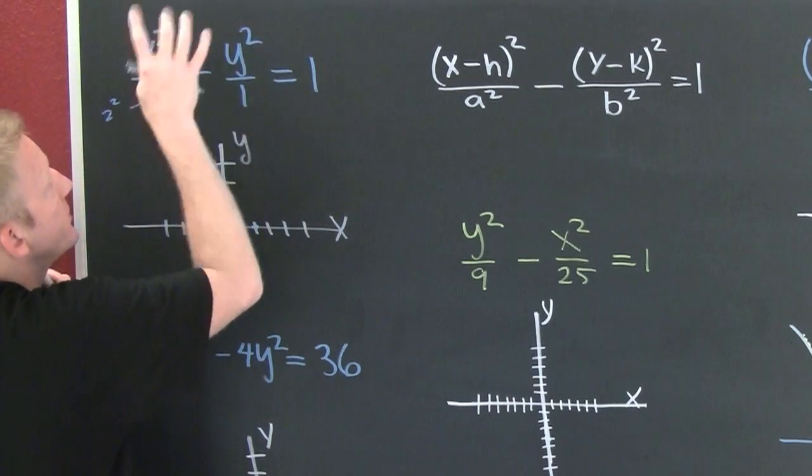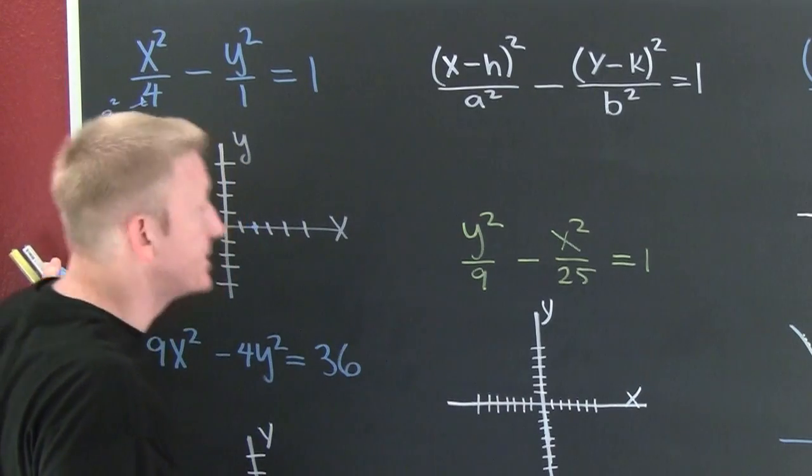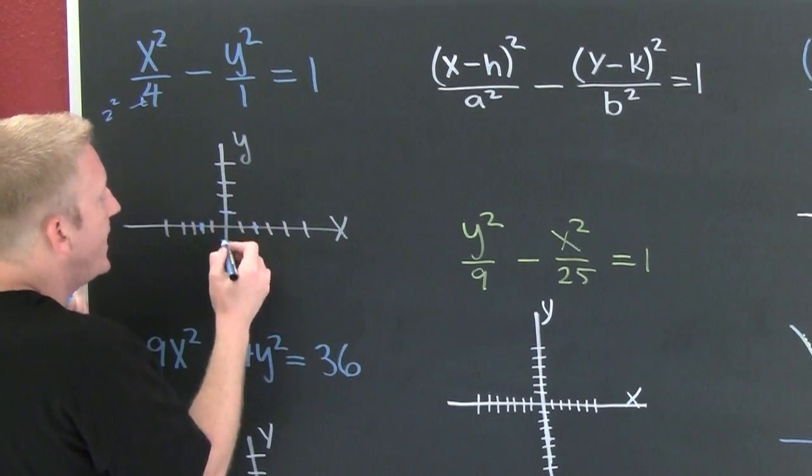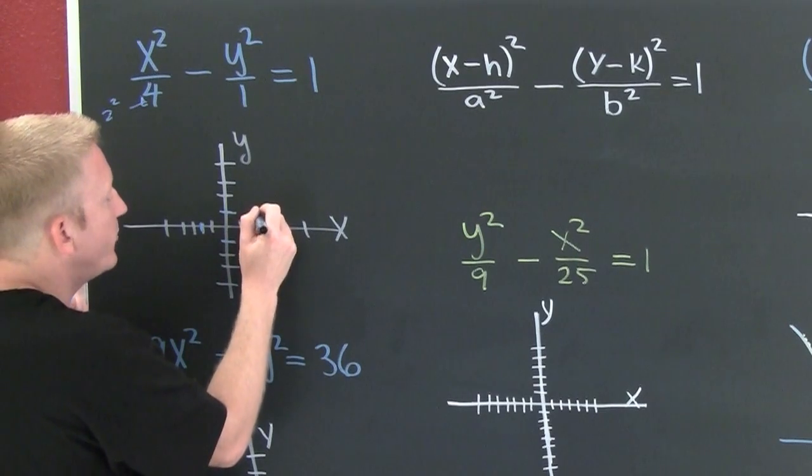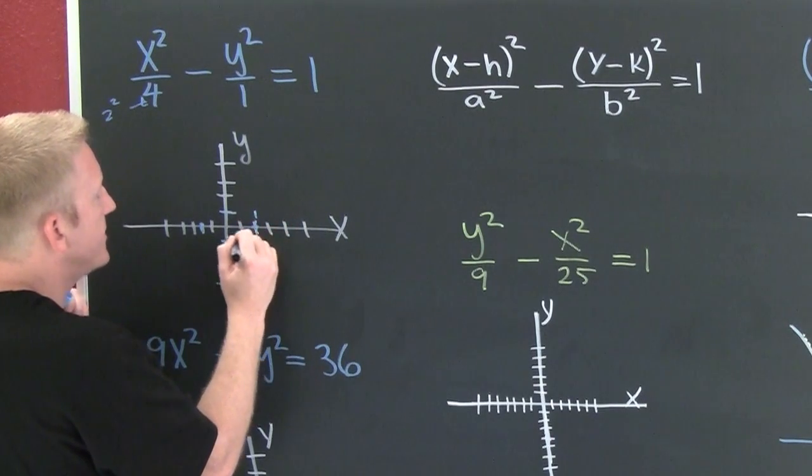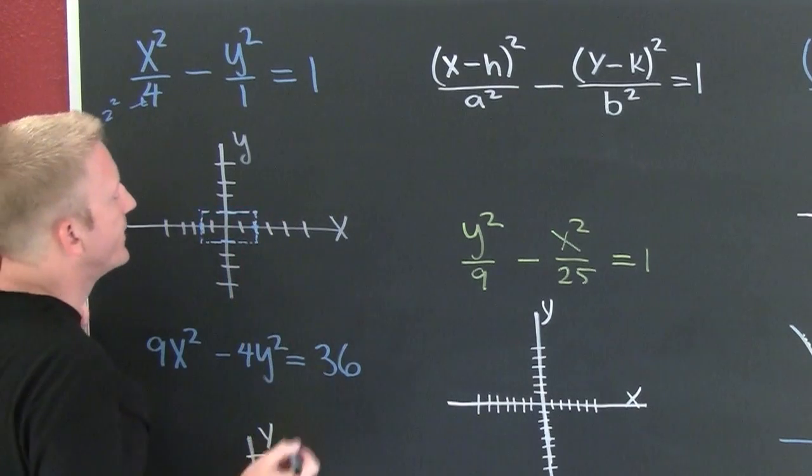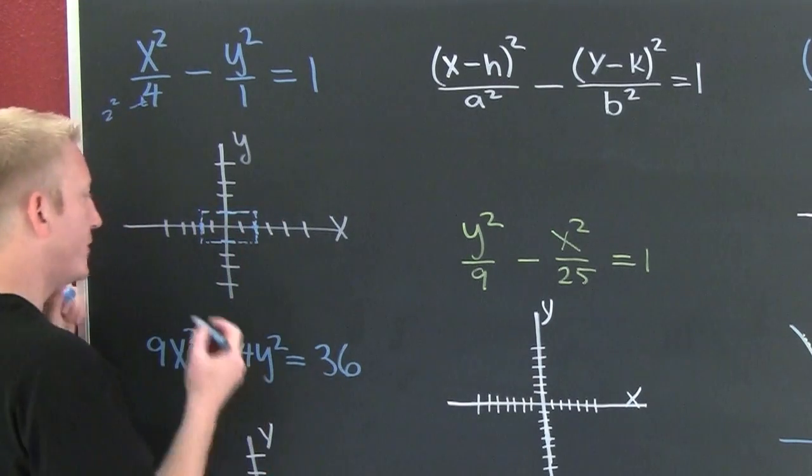I'm at the center because there's no numbers in the associations with X and Y. Here, this is one squared, so I go up one and down one. In here we're using the box method. I draw a box through those four points.